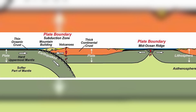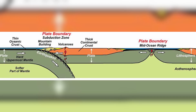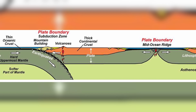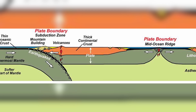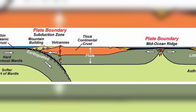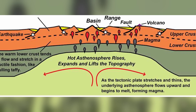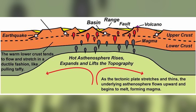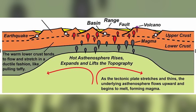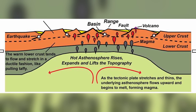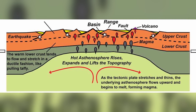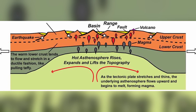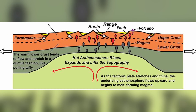Earthquakes can be broadly categorized into three main types: tectonic, volcanic, and induced. Tectonic earthquakes, the most common type, are caused by the movement and interaction of tectonic plates. As the plates grind against each other, they accumulate stress over time, which is released in the form of seismic waves, causing an earthquake.